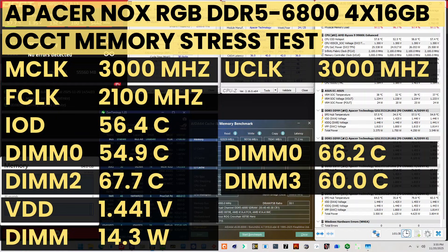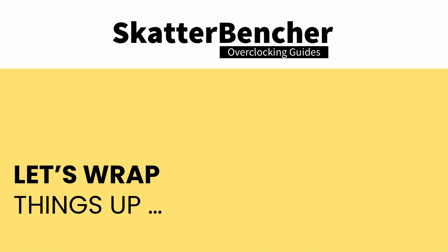When running the OCCT memory stress test, the average DIMM temperature ranges from 54.9 to 67.7 degrees Celsius. The average DIMM voltage is 1.441 volts, and the total DIMM power consumption is 14.3 watts.